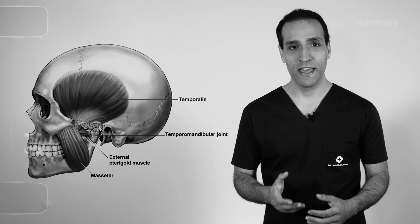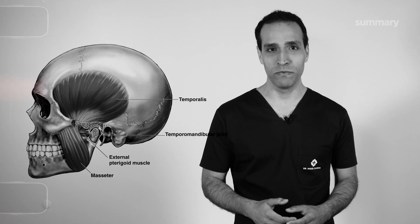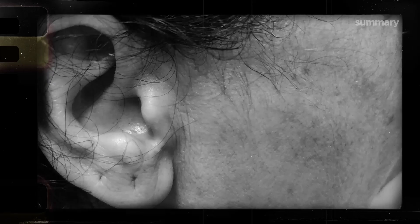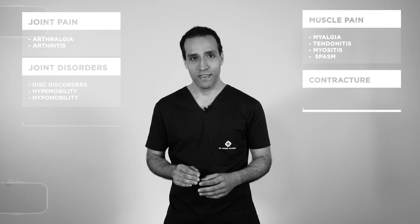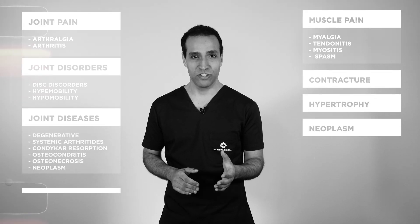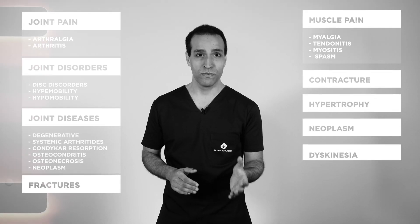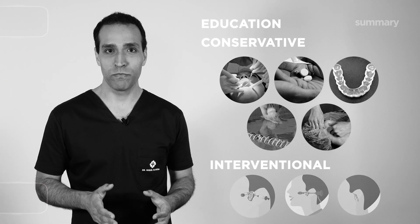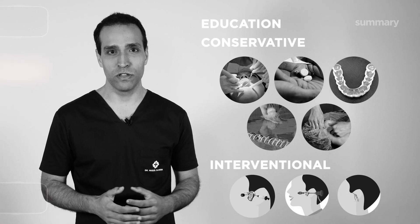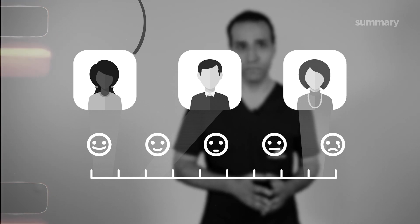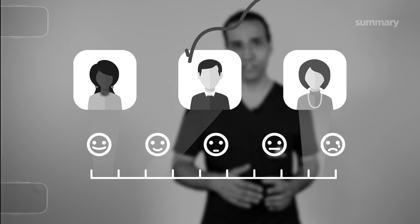So we have looked at the structure of the temporomandibular joints, how they work, the main symptoms and signs. We've navigated through the vast classification system of temporomandibular disorders. We went through the treatment options and understood the need for a tailored plan that might also incorporate focus on other diseases. Thank you for watching this video. I hope you feel a bit more informed about the temporomandibular joints.